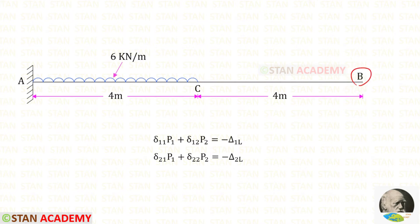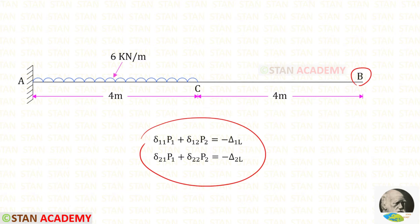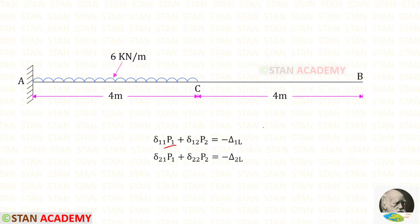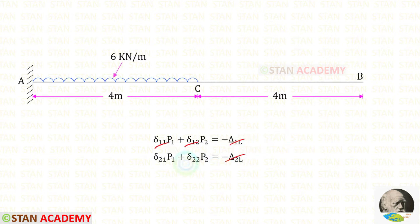To find both RB and MB, we have to use these two equations. We know that P1 is RB because it is our first coordinate and P2 is MB because it is our second coordinate. To find these six displacements, we are going to use the unit load method.